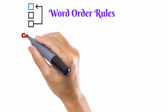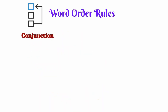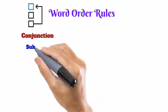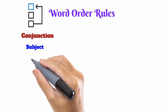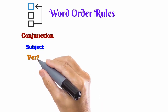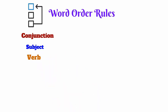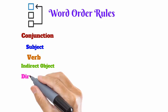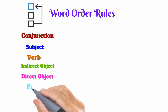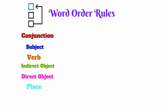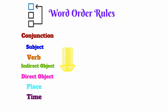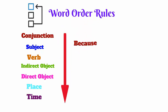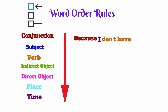The preferred order in a sentence is the conjunction, then the subject and agreeing verb, followed by the indirect object and direct object, which would be followed by the place and time. For example, it is easy to understand when I say: because I don't have time now.